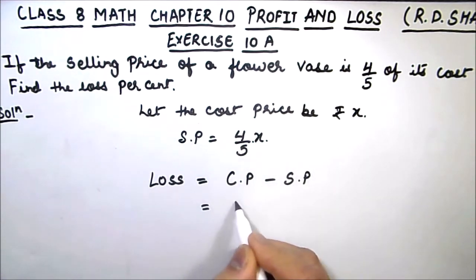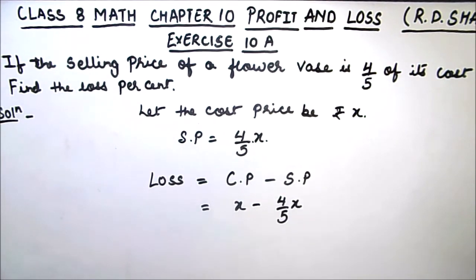Cost price is x minus four-fifths x is the selling price. Here we will take LCM. 5 is the LCM. So this will be 5x minus 4x which equals x over 5.